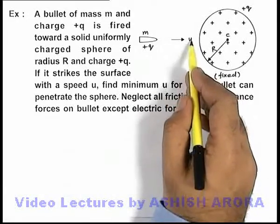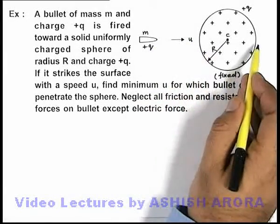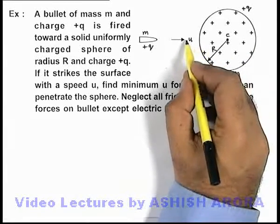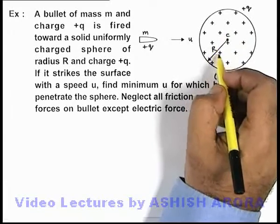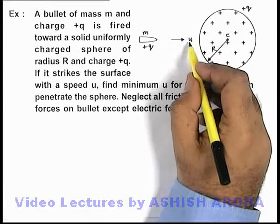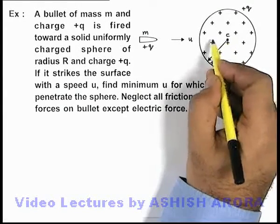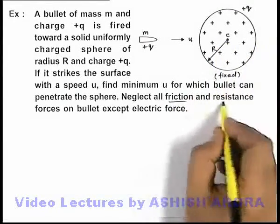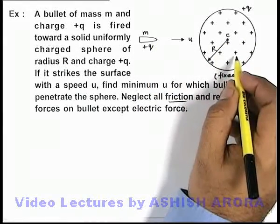We are required to find the minimum speed so that the bullet will be able to penetrate the sphere. When the bullet enters the sphere, due to the similar polarity of charges it will be repelled. And once it is able to cross the center, due to repulsion only it will be able to cross, because no friction or resistance is acting on the bullet except the electric force.